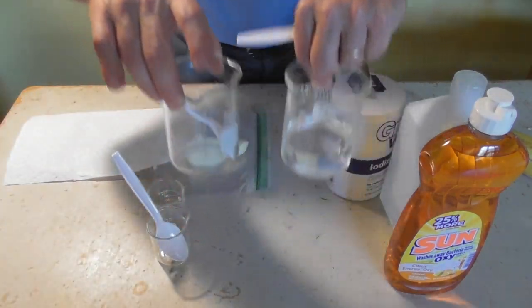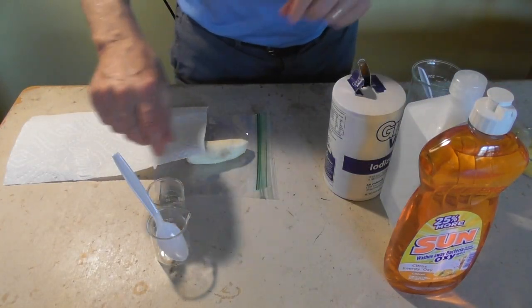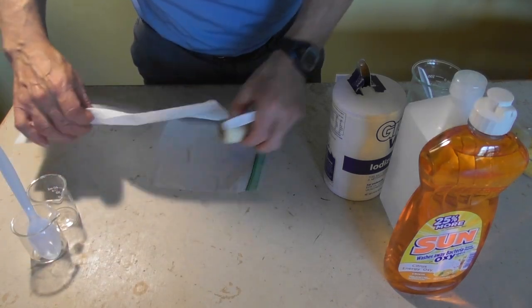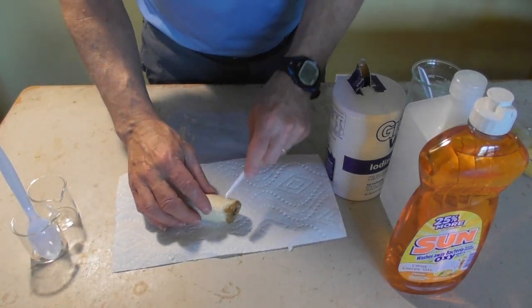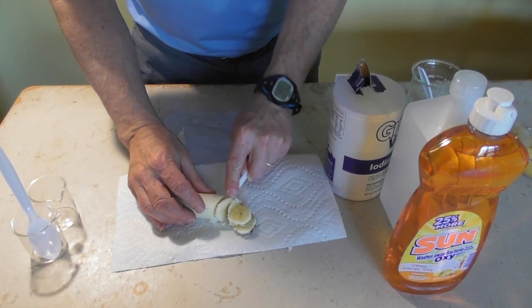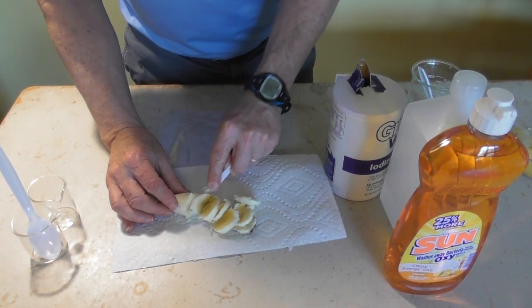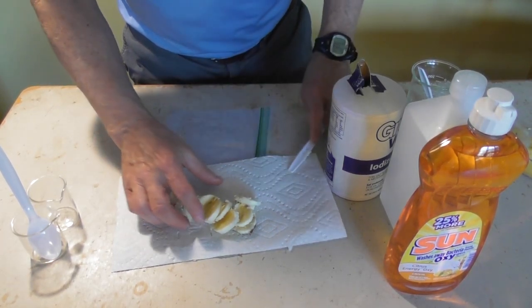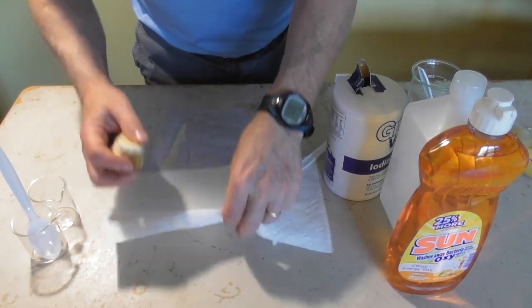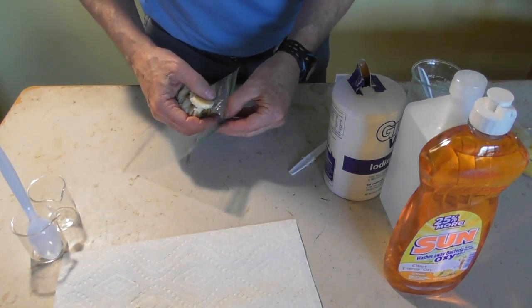But what we are doing is we are just mashing the banana. And I always tell my students you want the consistency of baby food. So I will break it into small pieces and then I will place these small pieces inside the bag.